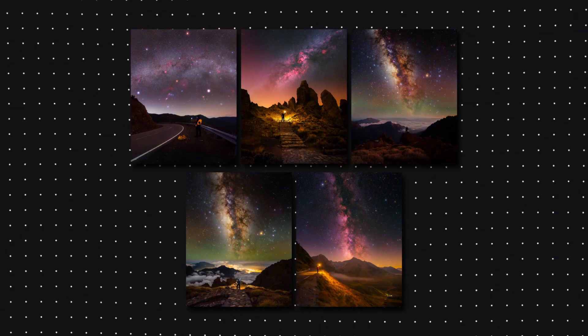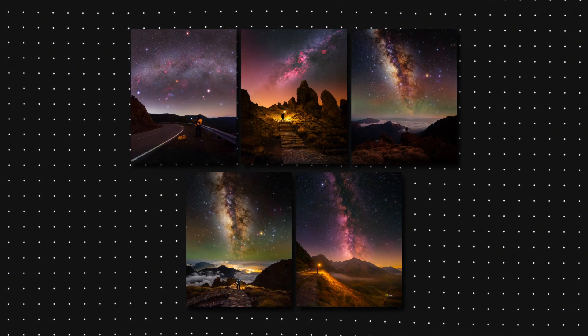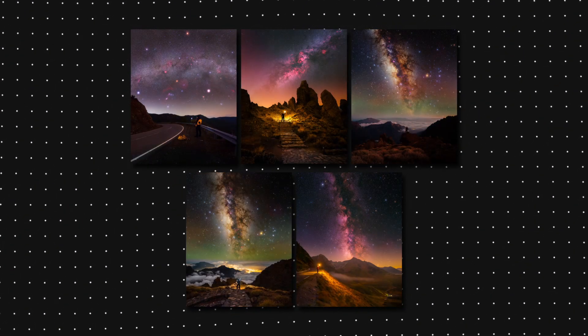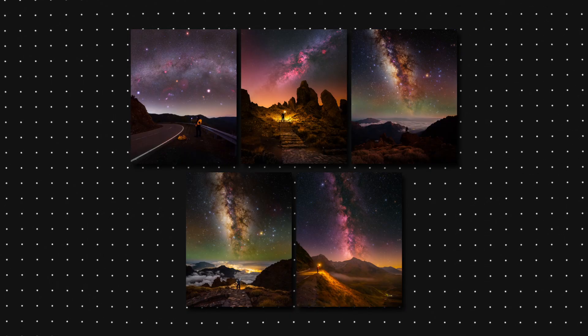So when composing your image, think of ways you can create the connection effect — it can be a building, a tent, a person standing there, or anything that reminds us that the Milky Way is actually part of our world. When you combine both flow and connection, you get amazing images. But it doesn't mean you should always use both — if only one of the two works for a composition, that's totally okay.